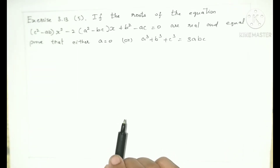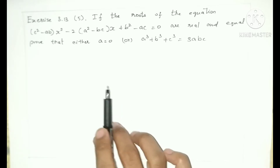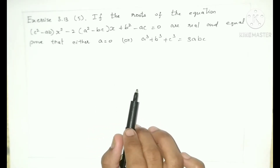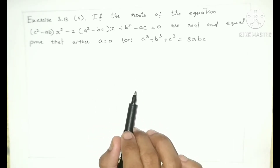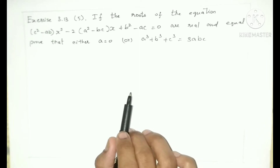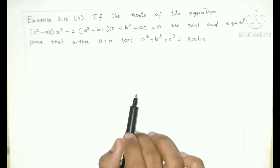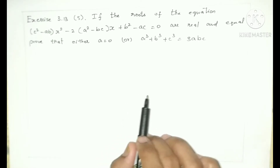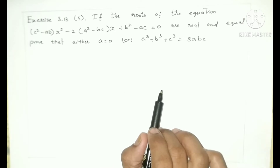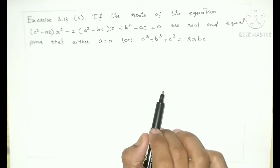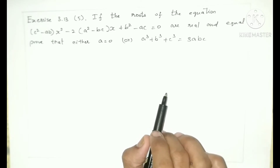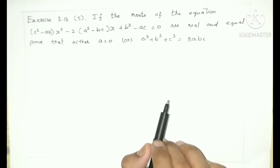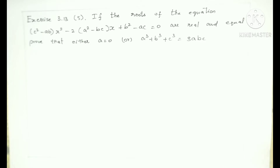If the roots of the equation — c squared minus ab, into x squared, minus 2 into a squared minus bc, into x, plus b squared minus ac equals 0 — are real and equal, prove that either a equals 0 or a cubed plus b cubed plus c cubed equals 3abc.